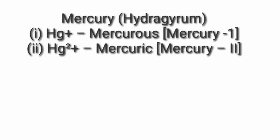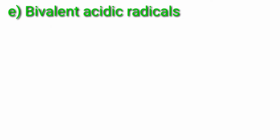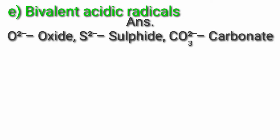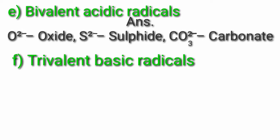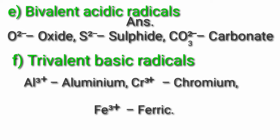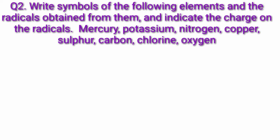D) Metals with variable valency — Iron: Fe2+, Fe3+; Copper: Cu+, Cu2+; Mercury: Hg+. E) Bivalent acidic radicals — O2− (oxide), S2− (sulfide), CO3 2− (carbonate). F) Trivalent basic radicals — Al3+ (aluminium), Cr3+ (chromium), Fe3+ (ferric).